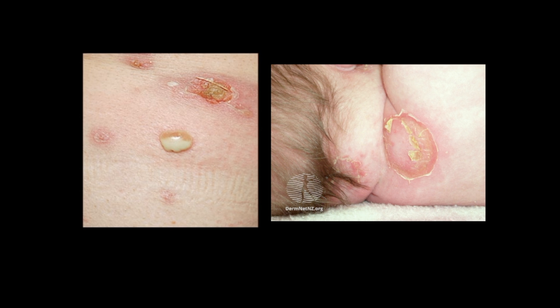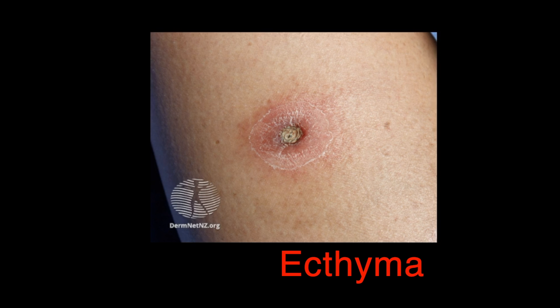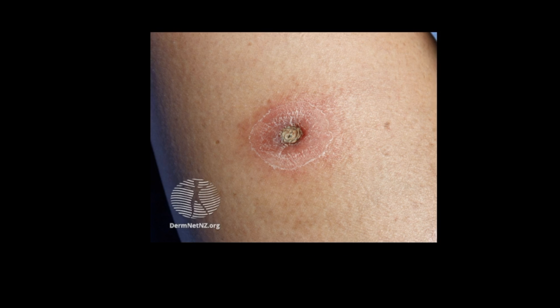Ecthyma, also known as deep impetigo, starts off as non-bullous impetigo but then develops into a punched-out necrotic ulcer, as seen in this photograph. It usually heals slowly and can leave a scar. Ecthyma is usually due to Strep pyogenes, but co-infection with Staphylococcus can occur.